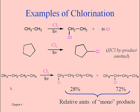Butane is an interesting case because we don't get just one particular chlorobutane. We could get either 1-chlorobutane or 2-chlorobutane — those are the two isomers. These percentages are what are actually found when this reaction is carried out; we get a lot more of the 2-chloro product. That's surprising because there are six hydrogens available that would give the 1-chloro product, versus only four hydrogens that could be removed to give the 2-chloro product. So we might guess we'd get more of the 1-chloro product.